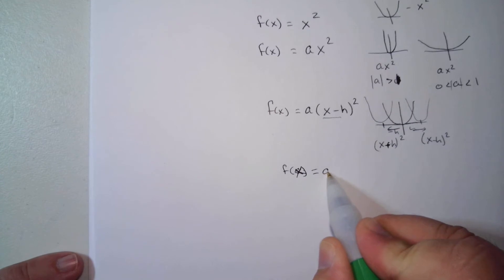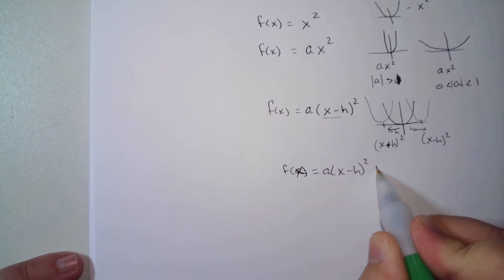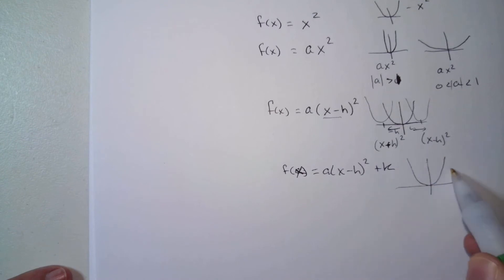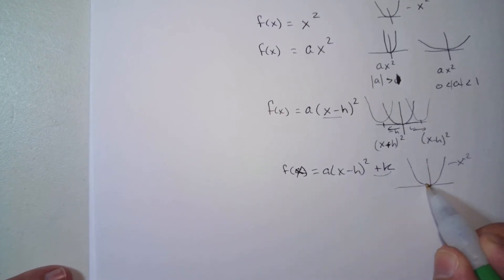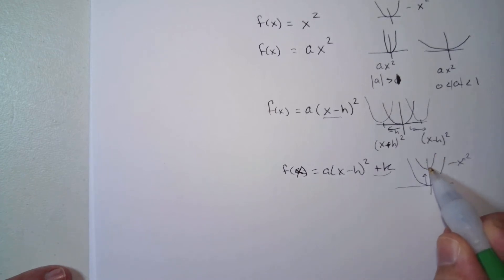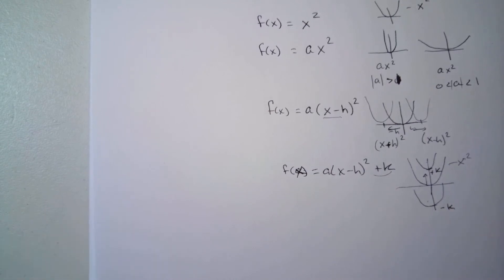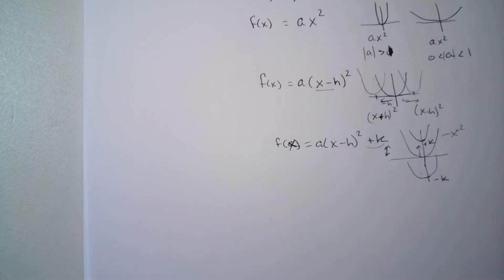Then the next thing is a vertical shift. This is our original x squared function. If k is positive, it goes up to whatever k is. If k is negative, it drops down. So k is the vertical shift. We did that last chapter.